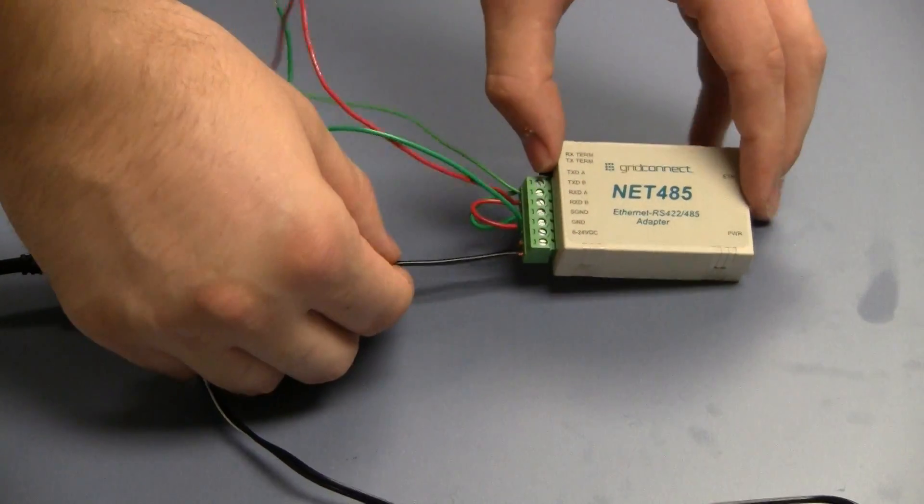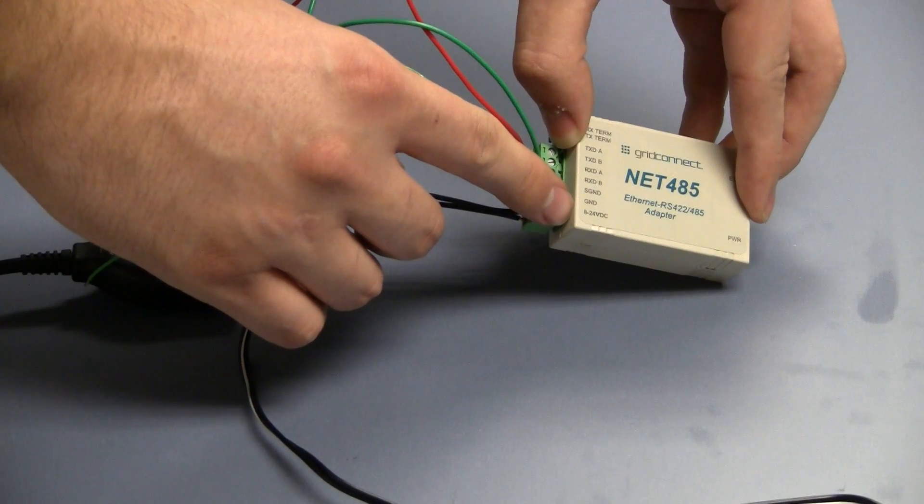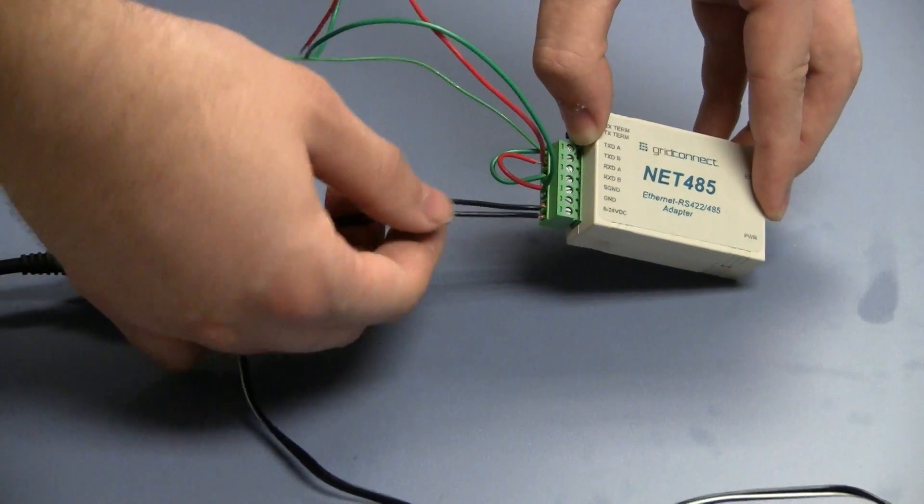First, you'll want to wire power to 8 to 24 volts DC and to ground, shown here.